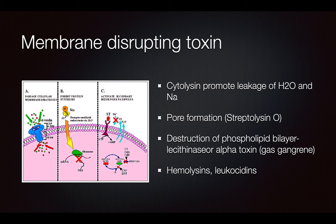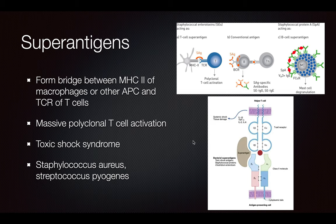Membrane-disrupting toxins: cytolysin is going to promote the leakage of salt and water. There's going to be pore formation thanks to streptolysin O, which forces a hole. Destruction of the phospholipid bilayer can be due to lecithinase alpha toxin, which will cause gas gangrene. Hemolysins and leukocidins will also disrupt the membrane. Superantigens bind to MHC2 of the macrophages or any other antigen-presenting cell and the T cell receptor of the T cell, binding several T cell receptors, stimulating a massive polyclonal T cell activation and cytokine storm, leading to toxic shock. It's usually caused by staphylococcus aureus and streptococcus pyogenes.